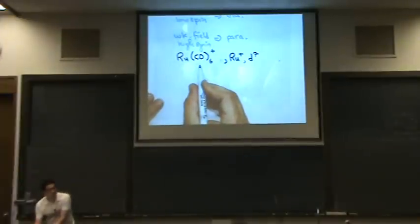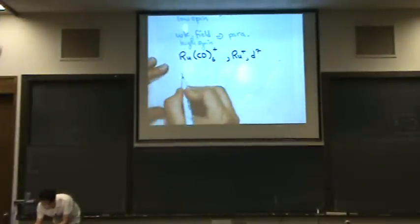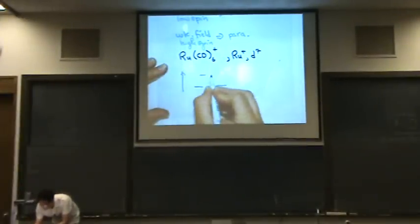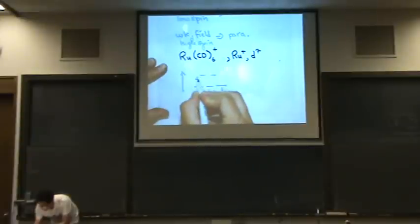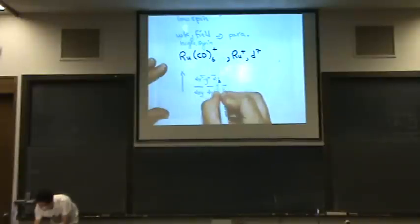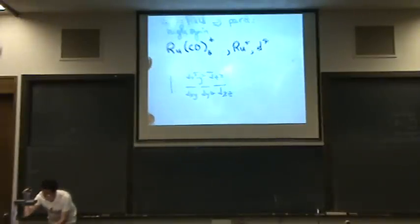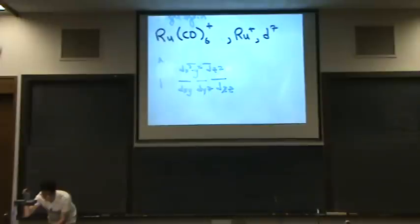It's octahedral, so I'm going to draw the octahedral picture. So there's three on the bottom, two on top. This is the dxy, the dyz, the dxz, and we've got the dx² minus y², and the dz². You can zoom in on this one.